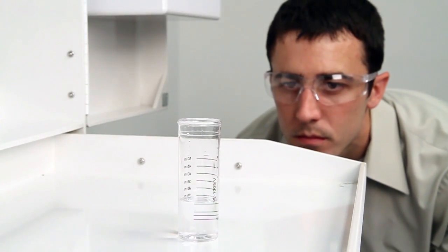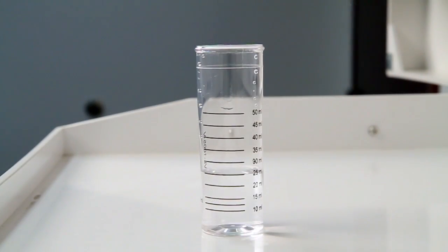When performing a drop count titration, a white background can provide contrast to better see the color changes. A cabinet tray or a white paper towel can provide that contrast.